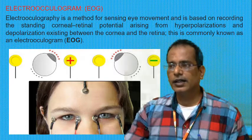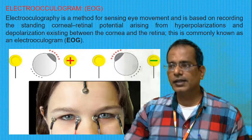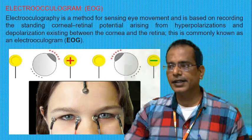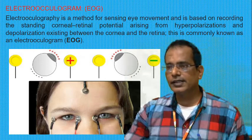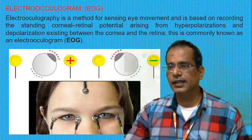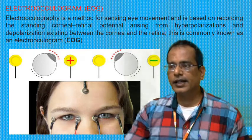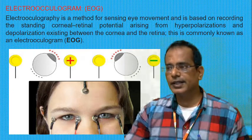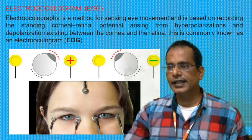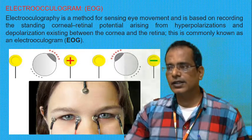EOG can be used to record eye movement during sleep and also during dreaming. This is mainly used for research purposes to study sleeping patterns and what eye movements occur. It is also used for recording eye movements from infants and children in order to evaluate reading ability and visual fatigue. This recording is called the electro-oculogram.